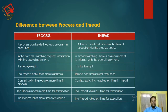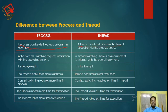The process takes more time for creation, but the thread takes less time for creation, because a process is much bigger than a thread. To summarize: a process is a program in execution, whereas a thread is the flow of execution via the process code.